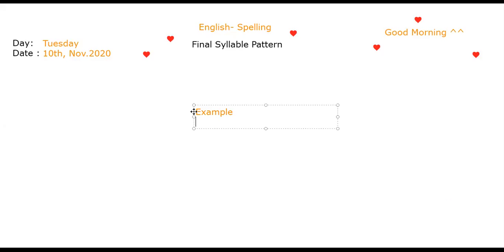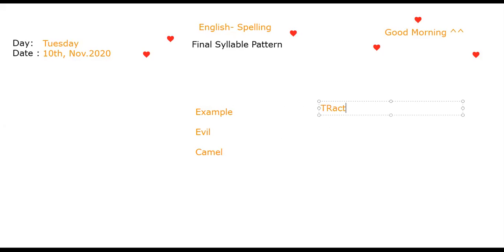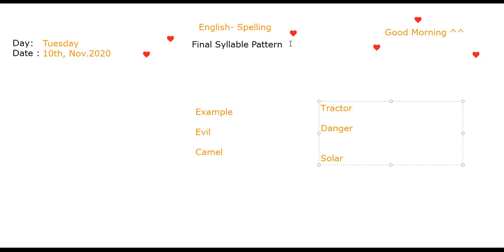Sorry, the internet connection stopped. No problem. And then evil, and then camel. And then if I give you also the word tractor, and the word danger, and the word solar. Now, the final syllable suggests that if you have words in English that give you the same sound, it's not necessarily the same spelling when you write it.